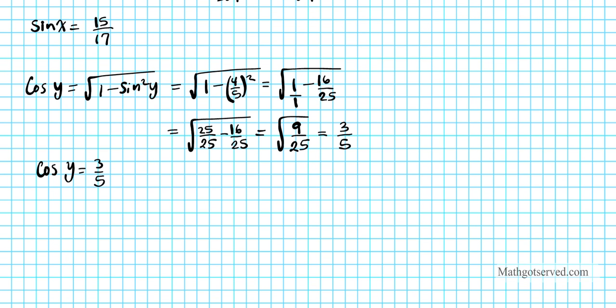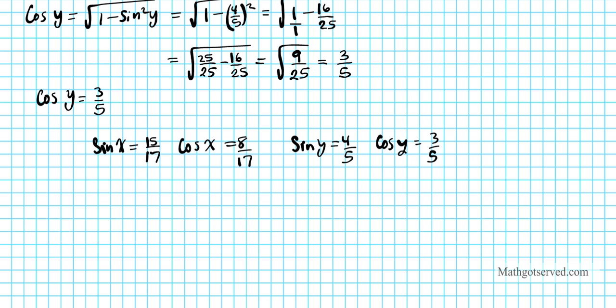So let's list everything we have. We know that sin x is 15/17, and from the problem we know that cos x is 8/17. Sin y from the problem we know is 4/5, and cos y from the work we just did here we know is 3/5. So these are the 4 ingredients that are required to evaluate what sin(x+y) is.